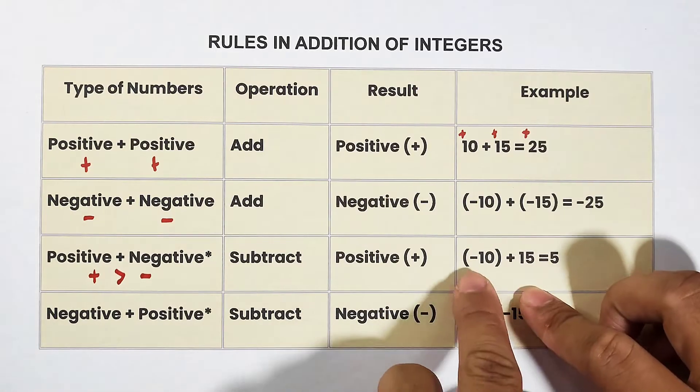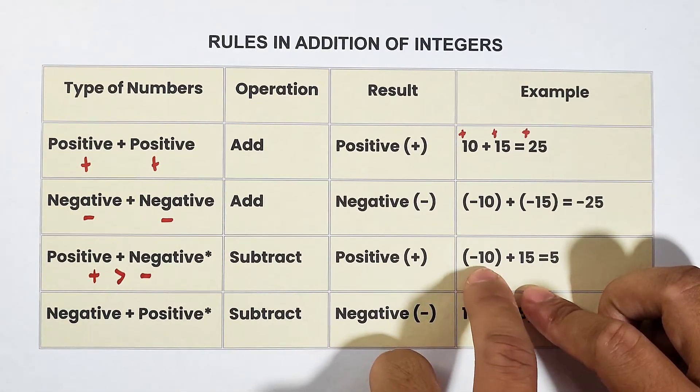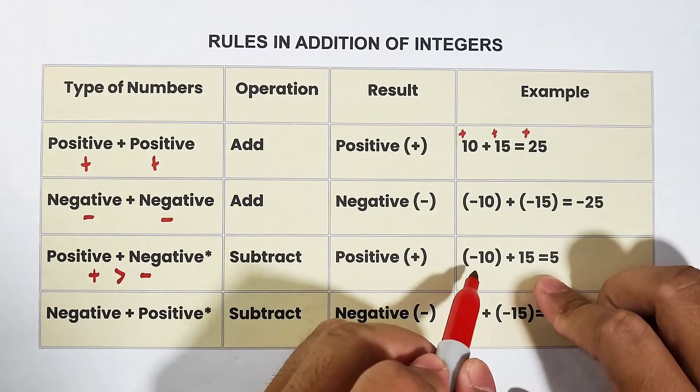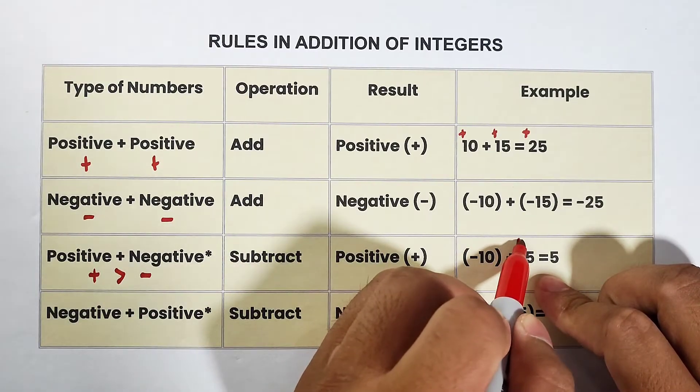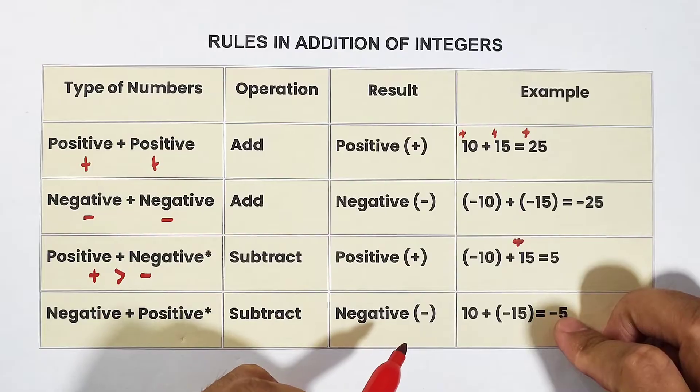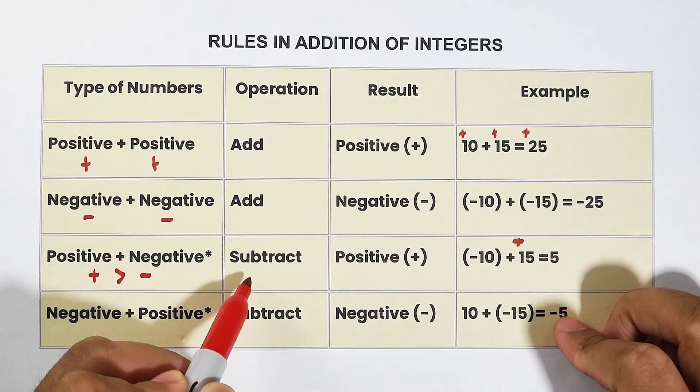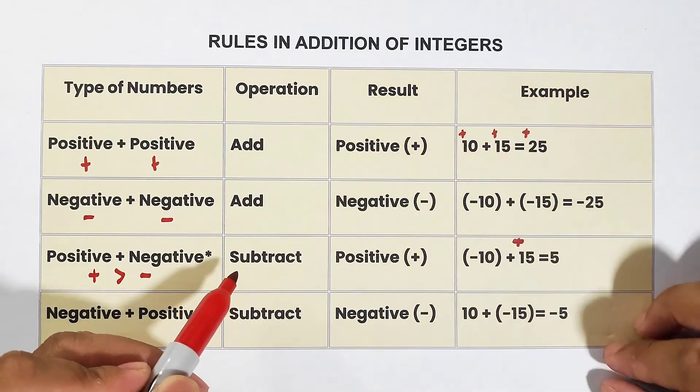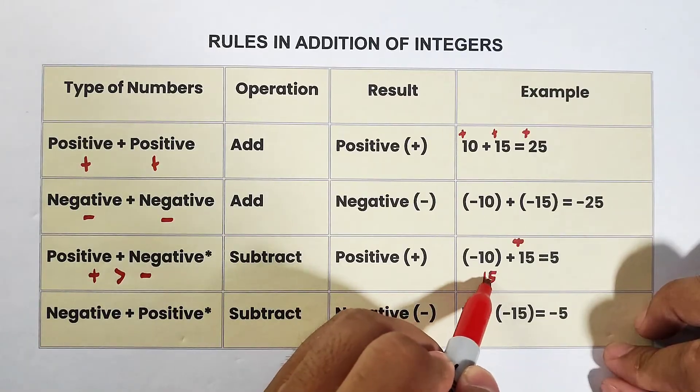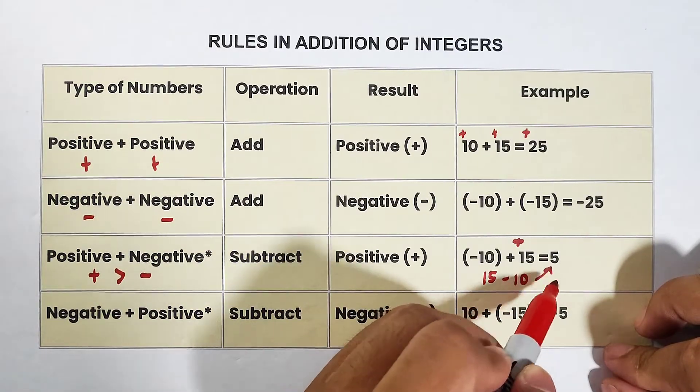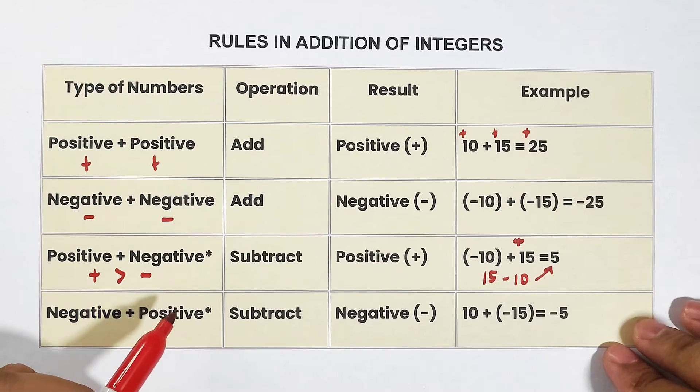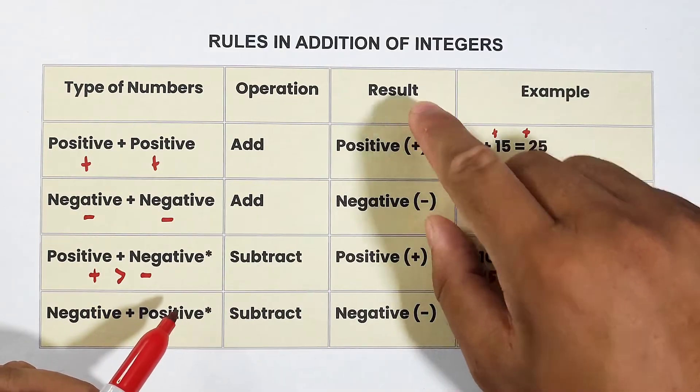Example, this one. We have negative 10 plus 15. One is negative and the other is positive. As you can see, it says subtract. So what you need to do in your mind is 15 minus 10, and it will give you the answer of 5.